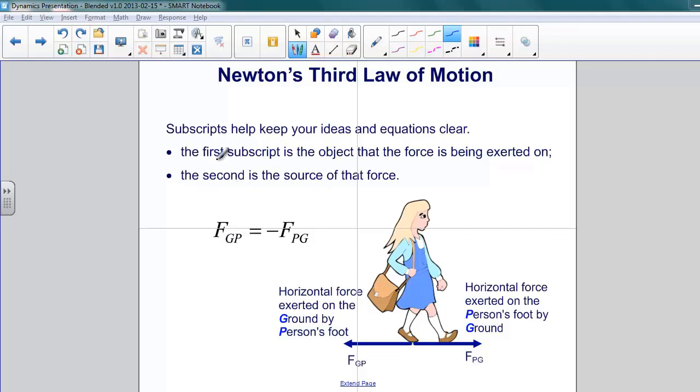The first subscript we want to use on the force describes the object that the force is being exerted on. The second one is the source of that force. So let's have a look at this diagram. Here we have a person walking along the ground. In order for them to move, they have to exert a horizontal force on the ground. Let's look at that force: force on the ground by the person. At the same time, we have Newton's third law, which tells us that there's no way that that force can be exerted without an equal and opposite force being exerted. And in this case, the ground is exerting a force on the person. So, force on person by ground.